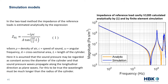In the two-load method, the impedance of the reference loads is estimated analytically by expression 1. It is assumed that the sound pressure may be regarded as constant across the diameter of the cylinder, that we excite and pick up through the full diameter, and that sound pressure waves propagate along the longitudinal direction as plane waves. In practice, especially when measuring on real ears, it's not possible to establish such ideal conditions. The graph to the right compares the impedance of reference load cavity 1285 cubic millimeters calculated analytically versus by finite element simulation from a 3D model of the exact geometry, showing a large difference especially at the minima — both in frequency and amplitude.